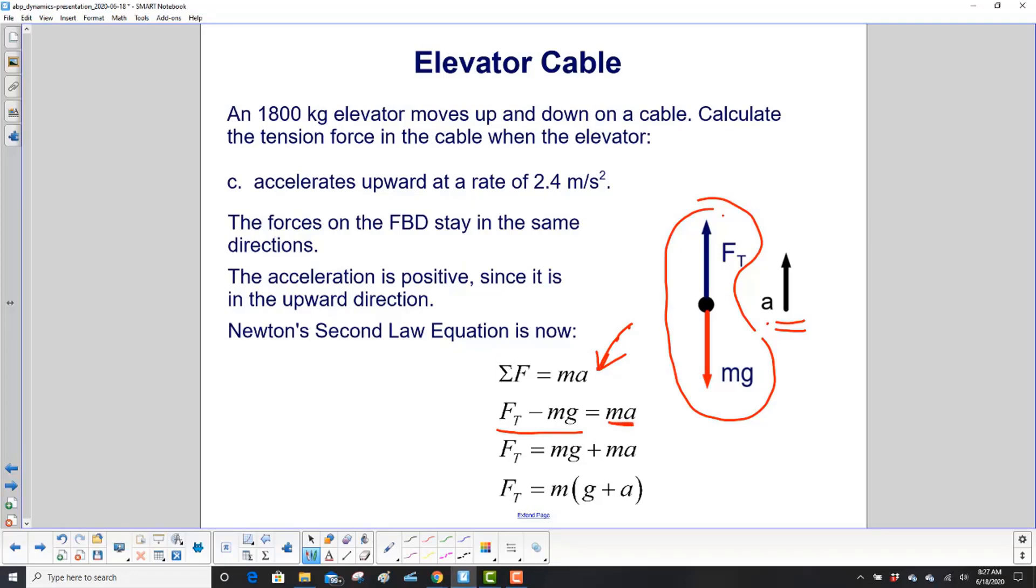We have F_T minus mg. This time ma does not equal zero, so we have to keep it in our equation. We want to isolate tension, so we add mg to both sides. This will cancel on the left, and on the right side we'll have mg plus ma or ma plus mg - it doesn't matter, the order of addition is reversible. We take one last step and factor out the m, so we have m(g + a). This will make the math a little easier.